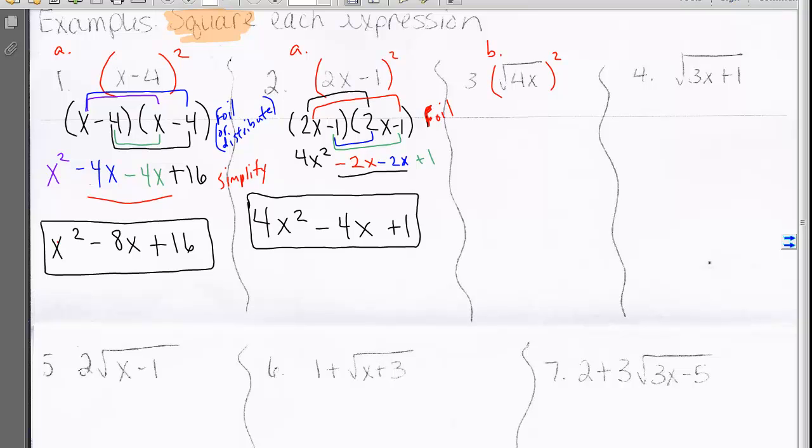Example 3 is an example of type B. When we square a radical, whatever is inside the radical will come out because we are undoing the square root. Number 4 is also type B. When we square a square root, we are undoing it, so it comes out 3x plus 1.